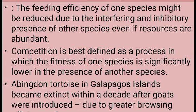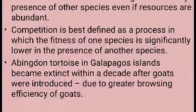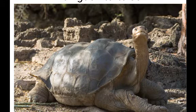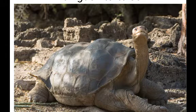Gause and other ecologists did laboratory experiments and said that when resources are limited, the competitively superior species will eliminate the other species. But evidence for such competitive exclusion — that is, elimination of one species in nature — is not always conclusive. There are some strong circumstantial evidences. For example, the Abington tortoise was living in the Galapagos Island and it became extinct when goats were introduced on the island. Within a decade, the Abington tortoise became extinct.